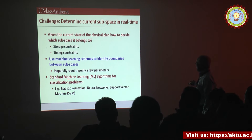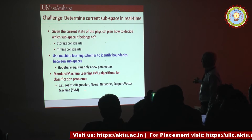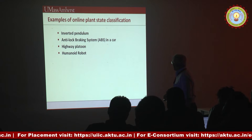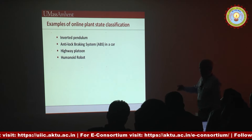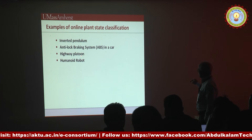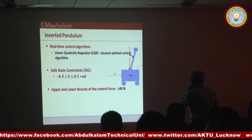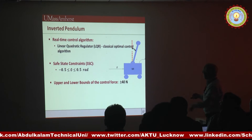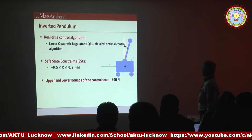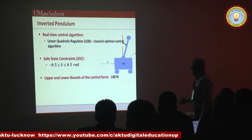We have experimented with several standard machine learning techniques: linear logistic regression, neural networks, support vector machines, and a few more, as we will see later. Let's see examples of how this works. We'll start with the trivial inverted pendulum example. The real-time control algorithm used is the linear quadratic regulator, a classical control algorithm. The constraints are that the angle should be between minus 0.5 and plus 0.5 radians, and the maximum force applied to the cart is between plus and minus 14 newtons.